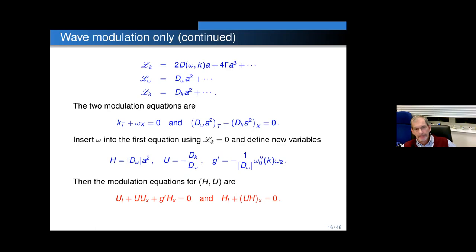Going back — we got a clue from when we did the uniform flow modulation. We have these two modulation equations. Instead, let's eliminate the frequency using L_a = 0. Expanding out omega and defining new variables — h is |d omega|, assuming d omega ≠ 0; u is the weakly nonlinear group velocity (actually linear group velocity); and g prime is this object — then the modulation equations for h and u are the shallow water equations.